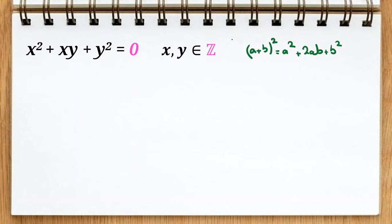So here I can say, okay, x squared plus xy plus, you can write y squared over four plus three y squared over four equal to zero.